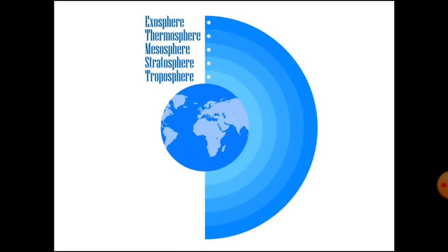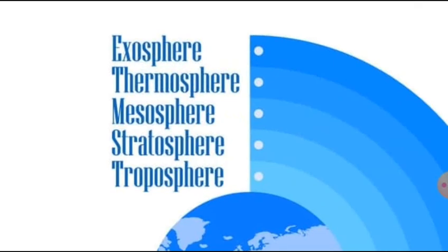Moving on to the next layer that is exosphere. Although some experts consider the thermosphere to be the uppermost layer of the atmosphere, others consider the exosphere to be the actual final frontier of the Earth's gaseous envelope. The air in the exosphere is very, very, very thin, making this layer even more space-like than the thermosphere.